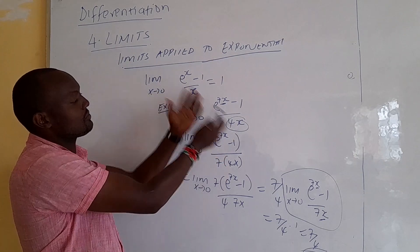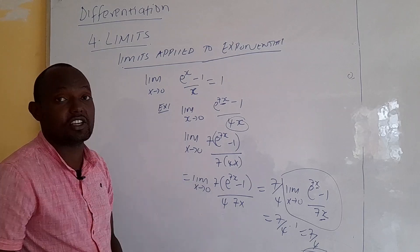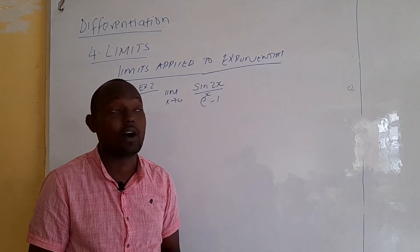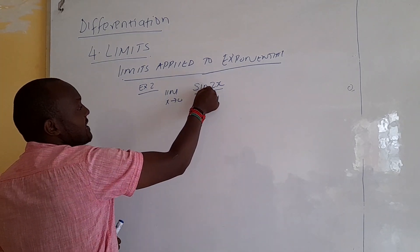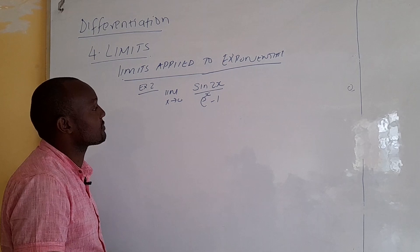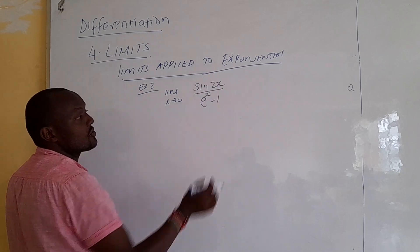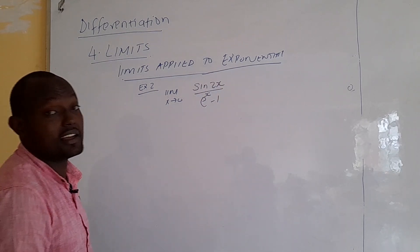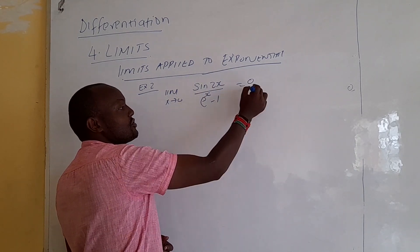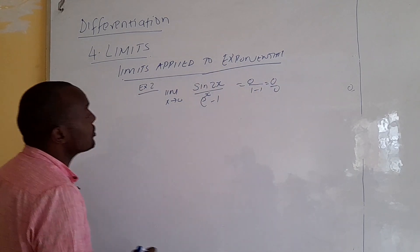Now let's look at a combination of trigonometry and exponential — Example 2: the limit as x approaches 0 of sin(2x) / (e^x - 1). We know that sin(2x)/(2x) equals 1 and (e^x - 1)/x equals 1. Direct substitution gives sin(0) = 0 over e^0 - 1 = 0, so we get 0 over 0 and cannot solve by direct substitution.